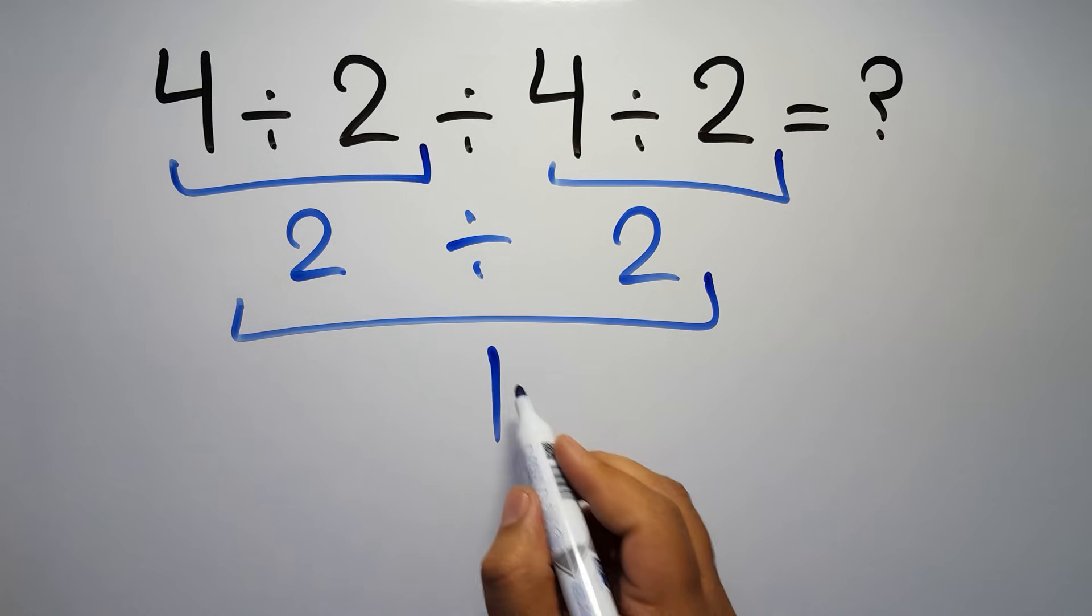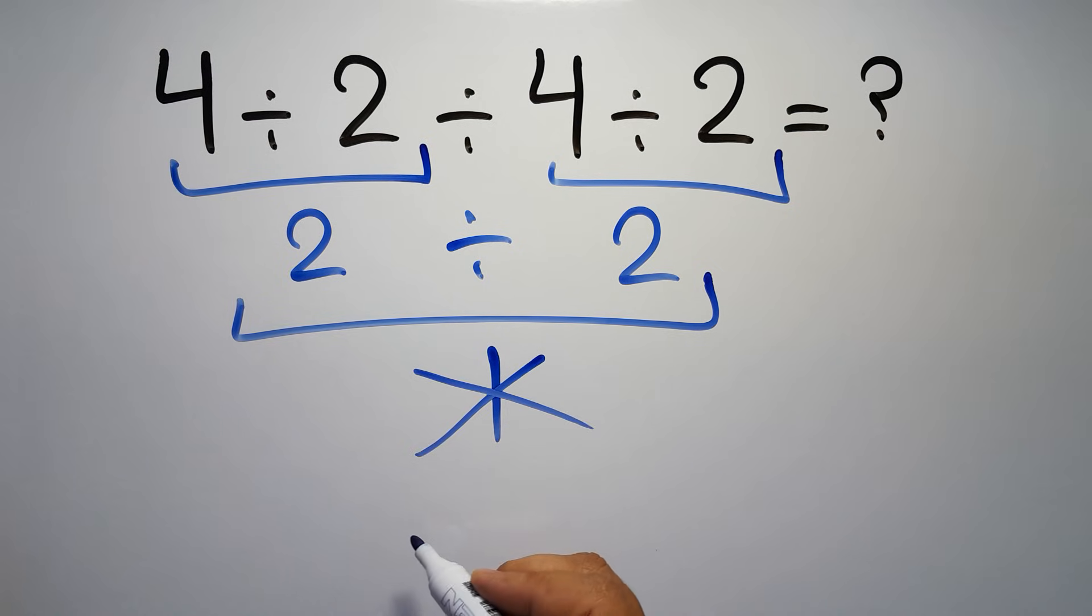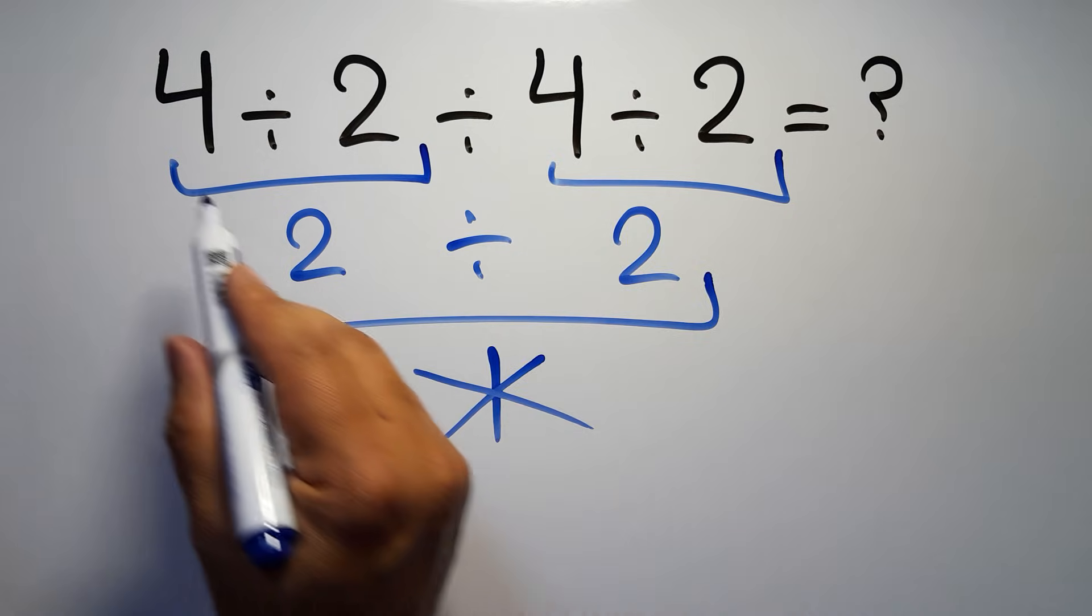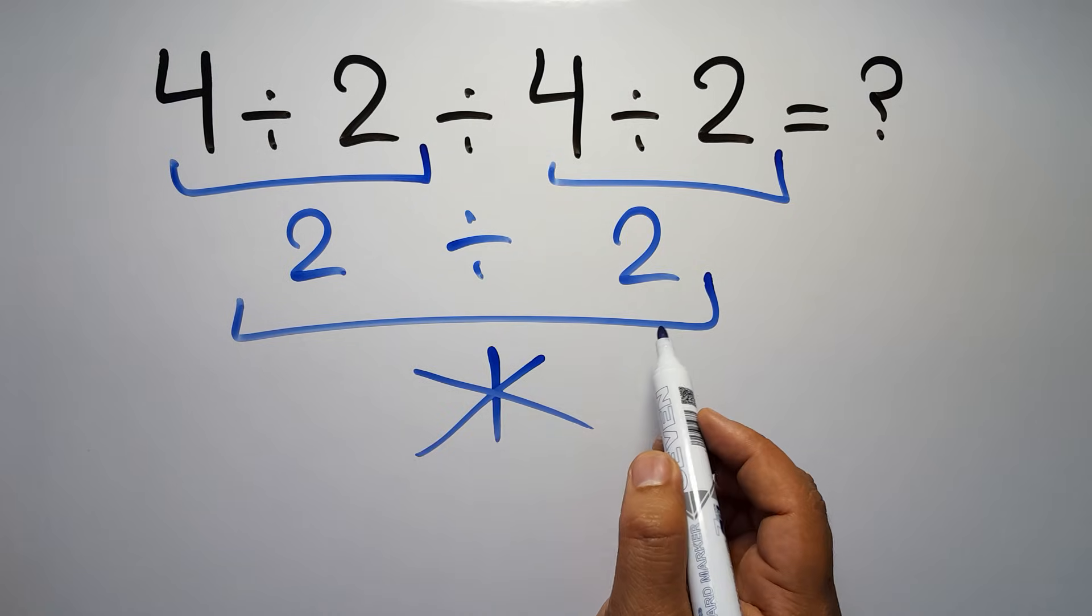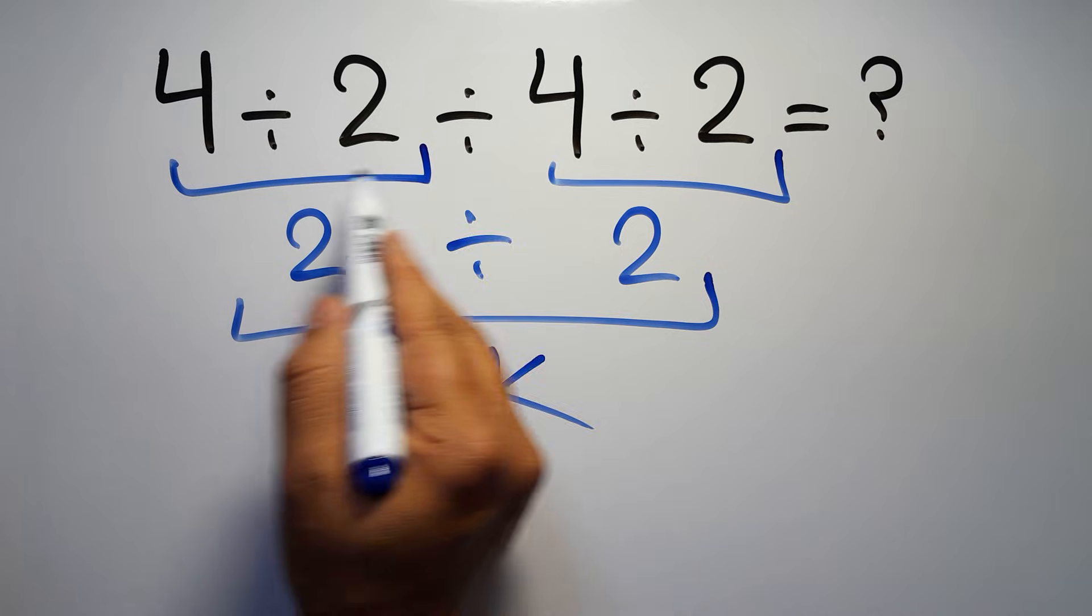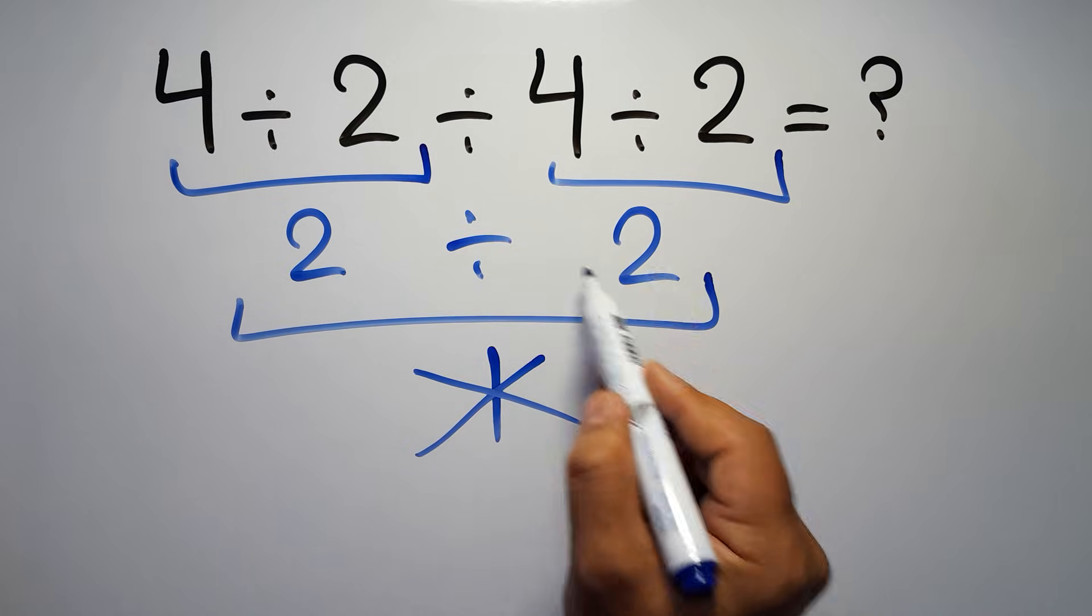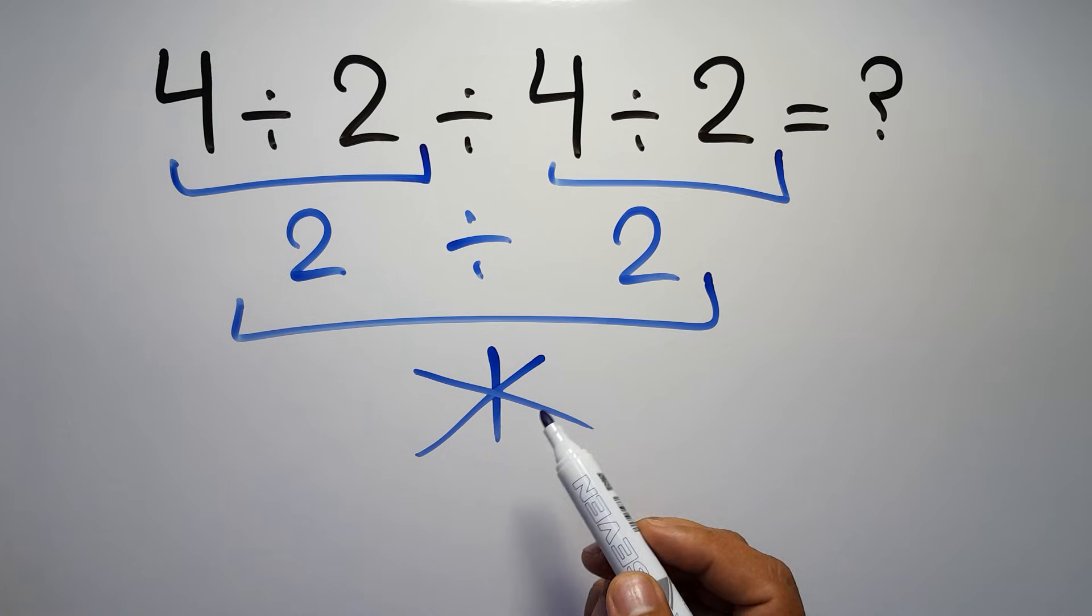But this answer is not correct, because according to the order of operations, when we have more than one division in an expression, we have to work from left to right. So here first we have to do this division, then this division, and finally this division. If we do this division before this division, it is wrong.